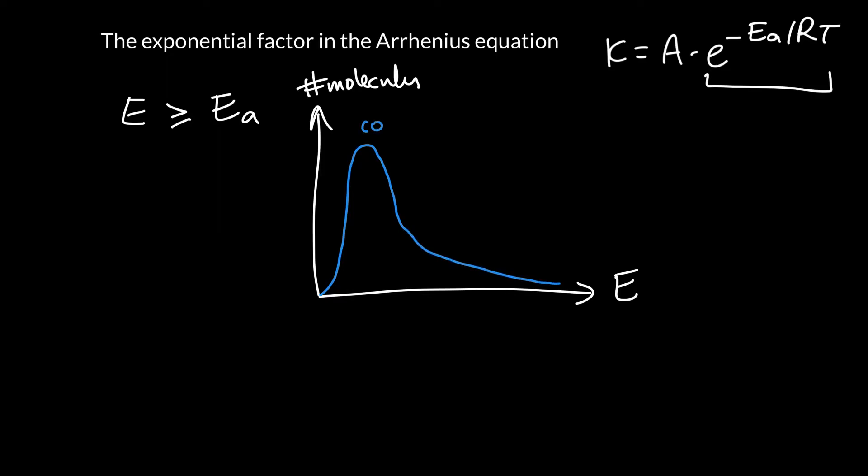For a cold temperature T1, this is what it looks like. Imagine we've got a minimum energy to react. Maybe we've got our activation energy right here, E sub A. What we can see is that at this cold temperature, essentially the only molecules that can collide are the ones shaded there under the curve.